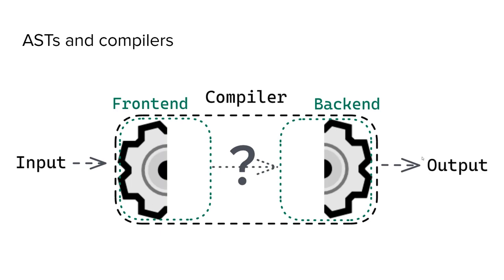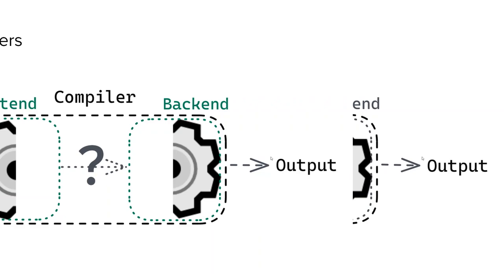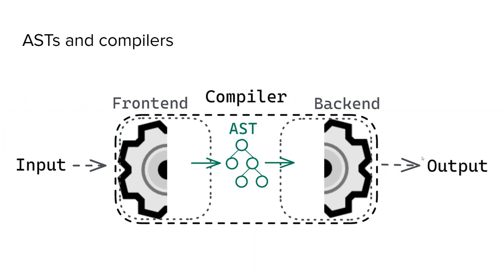Compilers are commonly broken down into two parts, the front-end and back-end. The front-end is responsible for scanning and parsing the source code, while the back-end is responsible for producing the output. One benefit of making this distinction is the ability to combine a different front-end and back-end, depending on the input language being compiled and the desired output language. In order for this to work, the front-end and back-end need some form of protocol, or an intermediate representation of the input. Typically, the output of the front-end is an abstract syntax tree. It's considered abstract because it has abstracted away syntax that is irrelevant when represented by a tree, since it can imply things like hierarchy.